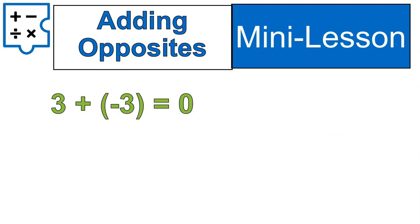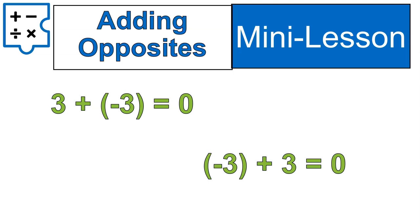The way we write this in a math expression is like this: three plus negative three. And it becomes an equation when we say equals zero. Three plus negative three equals zero, or negative three plus three equals zero. Both of those basically say the same thing — we've just moved the numbers around a bit.